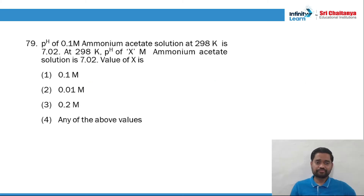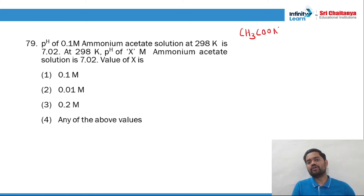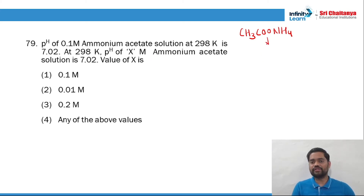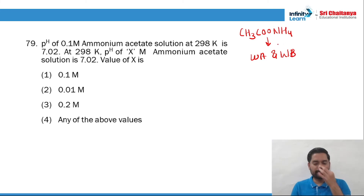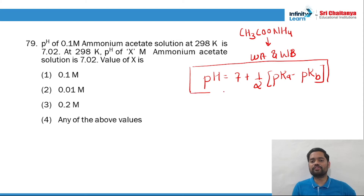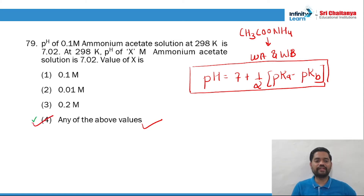Question 79: pH of ammonium acetate (CH3COONH4) solution. Ammonium acetate is a salt of weak acid and weak base. The pH formula for weak acid and weak base is 7 + ½(pKa − pKb). This equation is independent of concentration. Since it is independent of concentration, X can be any value. So option 4 is the right answer.